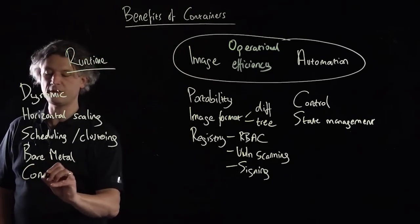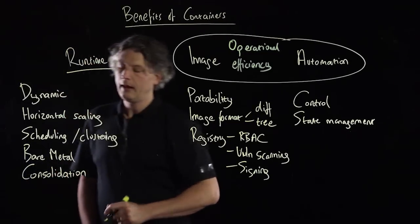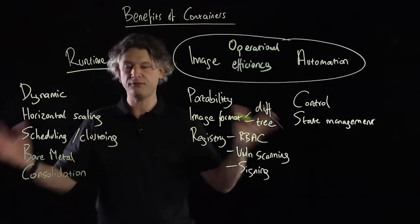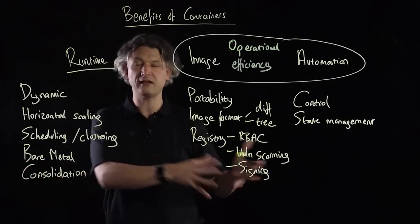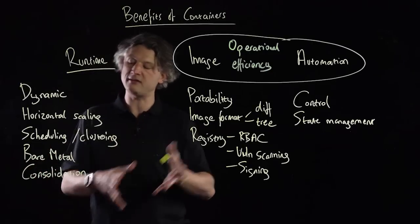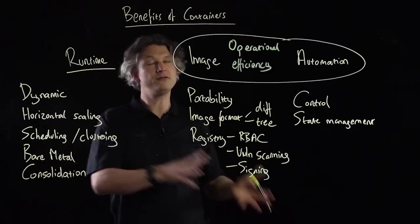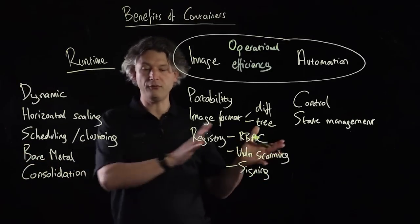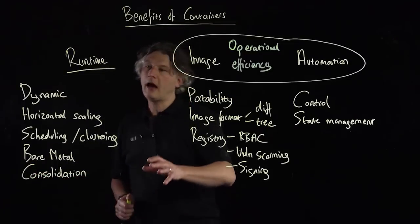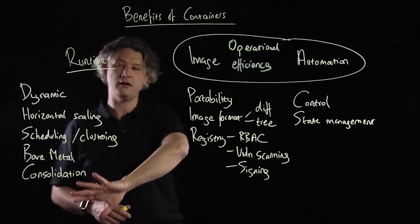The final thing I would add — which I probably should have added at the start because it's one of the more obvious things — is consolidation. With containers, you can run multiple of a thing inside of an operating system and have those things be isolated from each other. Because they're sharing a kernel, you get potentially significant consolidation benefits, in the same way as when people went from physical to virtual. If you go from a legacy workload to a containerized workload, you may find you get consolidation benefits. These runtime benefits are typically where people are going when they think about deploying containers.